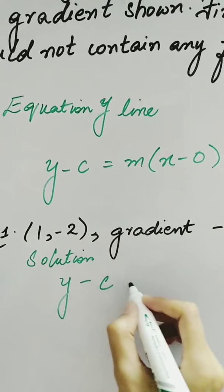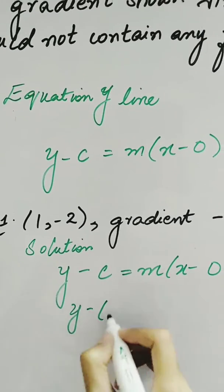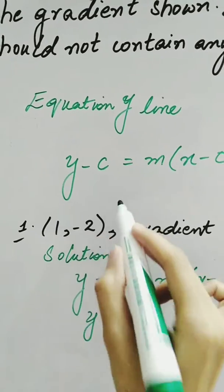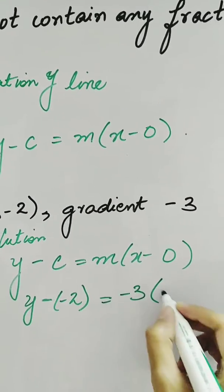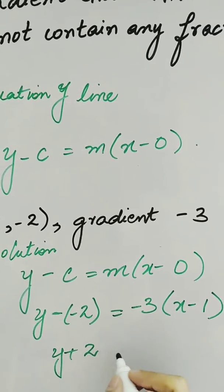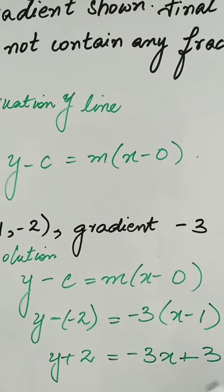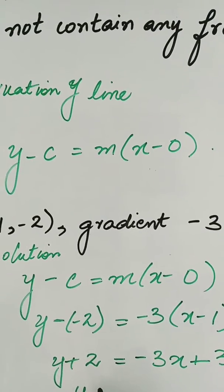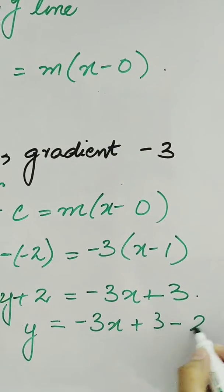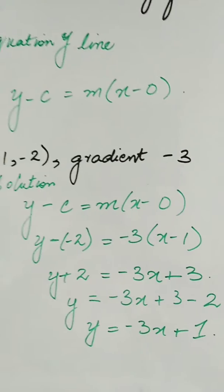We start solving. We have y - (-2) = -3(x - 1), so y + 2 = -3x + 3. Therefore, y = -3x + 3 - 2, which gives y = -3x + 1. This is our equation.